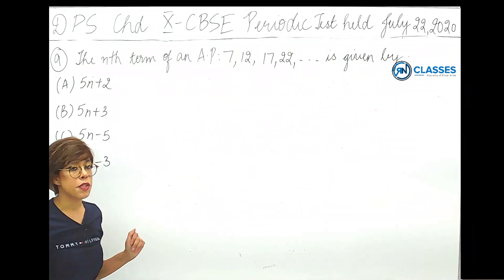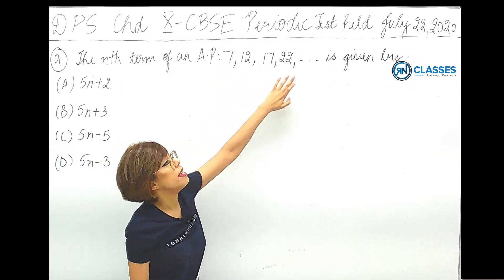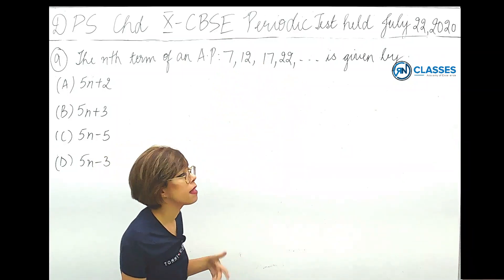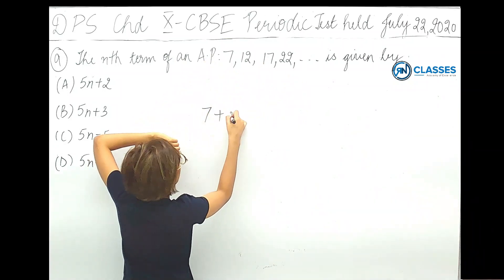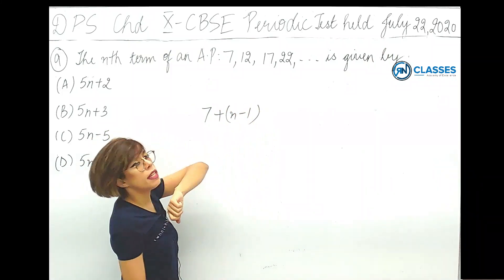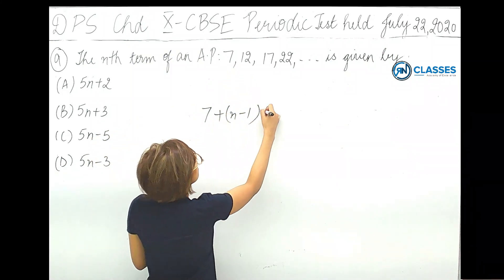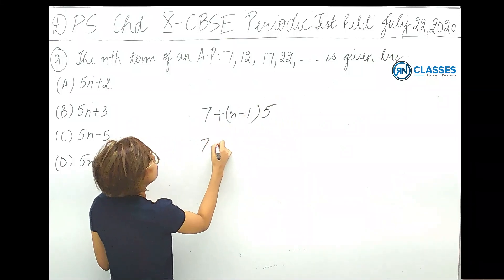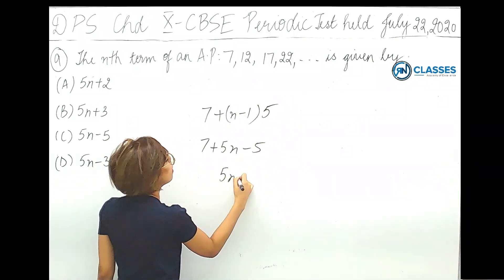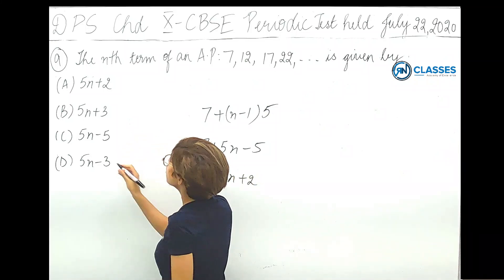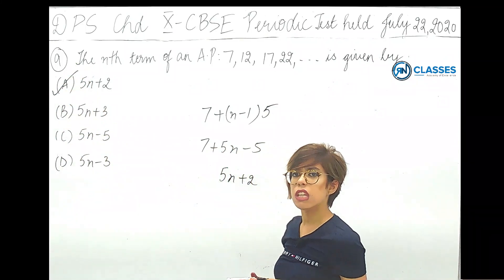The next question: find the nth term of an AP with first term 7 and common difference 5. The nth term is a plus n minus 1 into d, which is 7 plus 5n minus 5, giving 5n plus 2. Option A is correct. As a check, putting n equals 1 gives 5 plus 2 equals 7, which matches the first term.